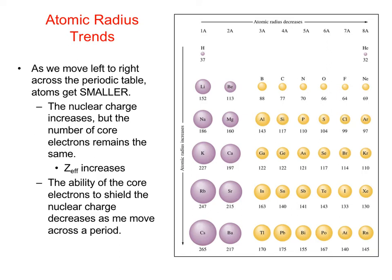As we look at the trend going left to right across the periodic table, without knowing about effective nuclear charge it might seem unusual — because as we go from left to right across a row, atoms get smaller even though they have more electrons. This is due to effective nuclear charge. Atoms in the same row have the same number of core electrons, but as we go from left to right the charge of the nucleus increases while the number of core electrons stays the same. So the effective nuclear charge increases, the valence electrons feel a greater pull from the nucleus, and that sucks the electrons in tighter — so the atoms get smaller.